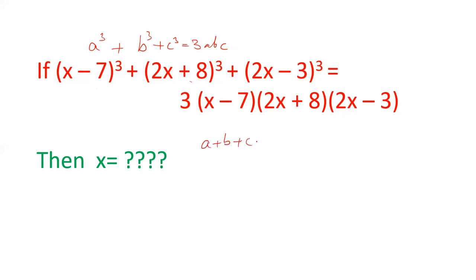So a + b + c = 0. That means (x-7) + (2x+8) + (2x-3) = 0, because a³ + b³ + c³ = 3abc. So individually, a + b + c will be 0.